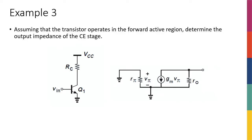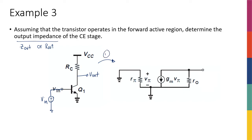Let's do the second example. This time we want to find the output impedance of the circuit — Zout or Rout. We're talking about the same circuit: Vout at the collector, Vin is a voltage source, and we have Vcc and Rc. Step one is drawing the small signal model, which includes Rc to ground. Step two, turn off all independent sources — so Vin is turned off. Step three is connecting VX and a current IX flowing through it. Step four is to analyze the circuit and find how VX and IX relate.